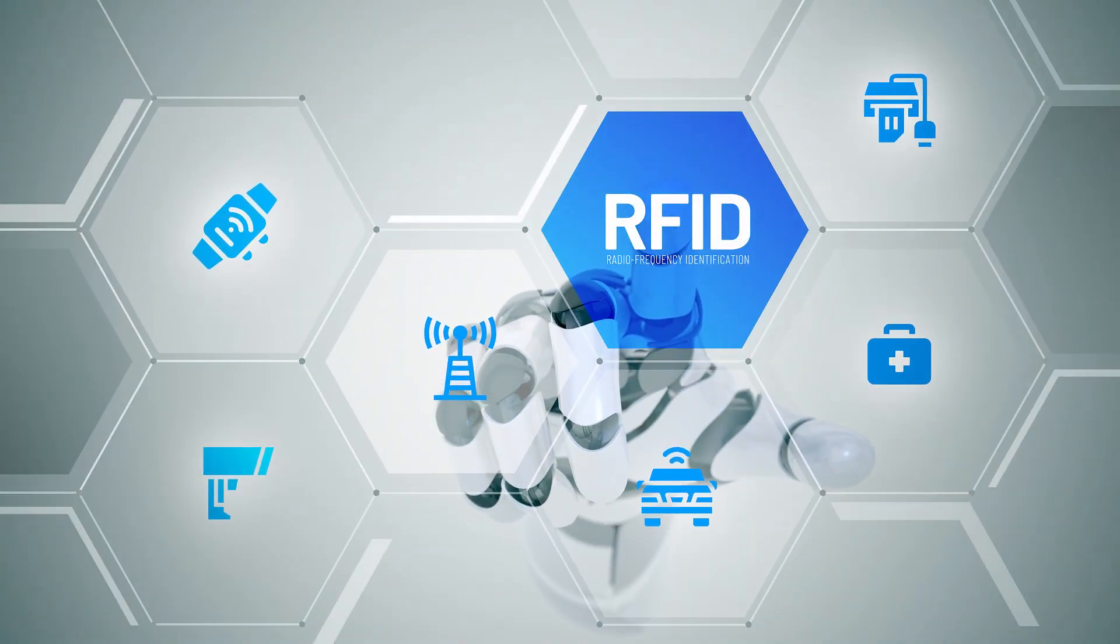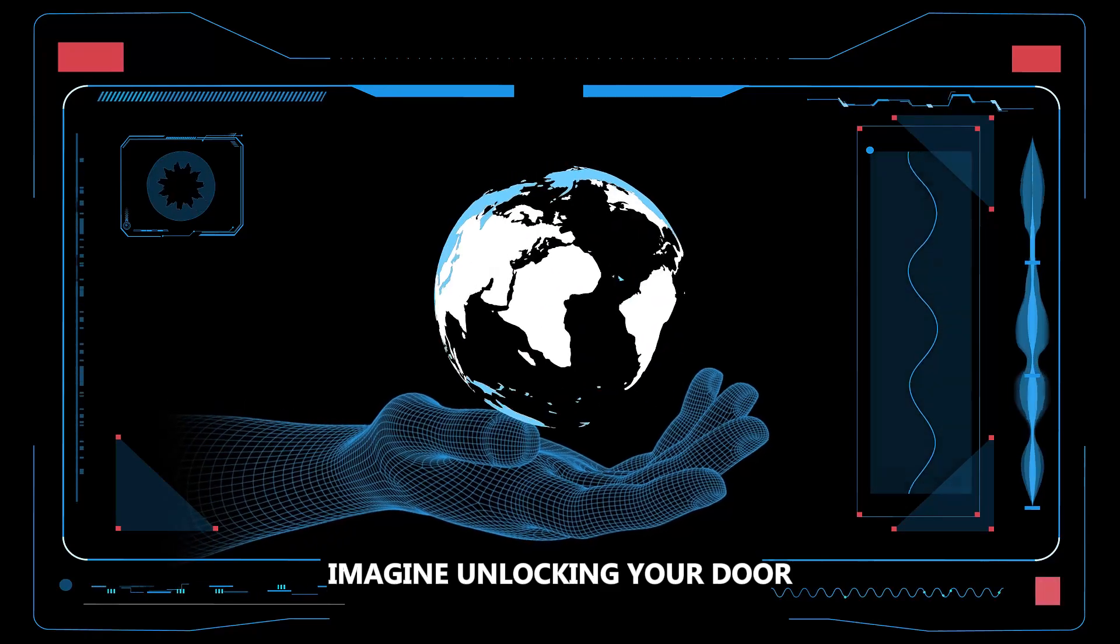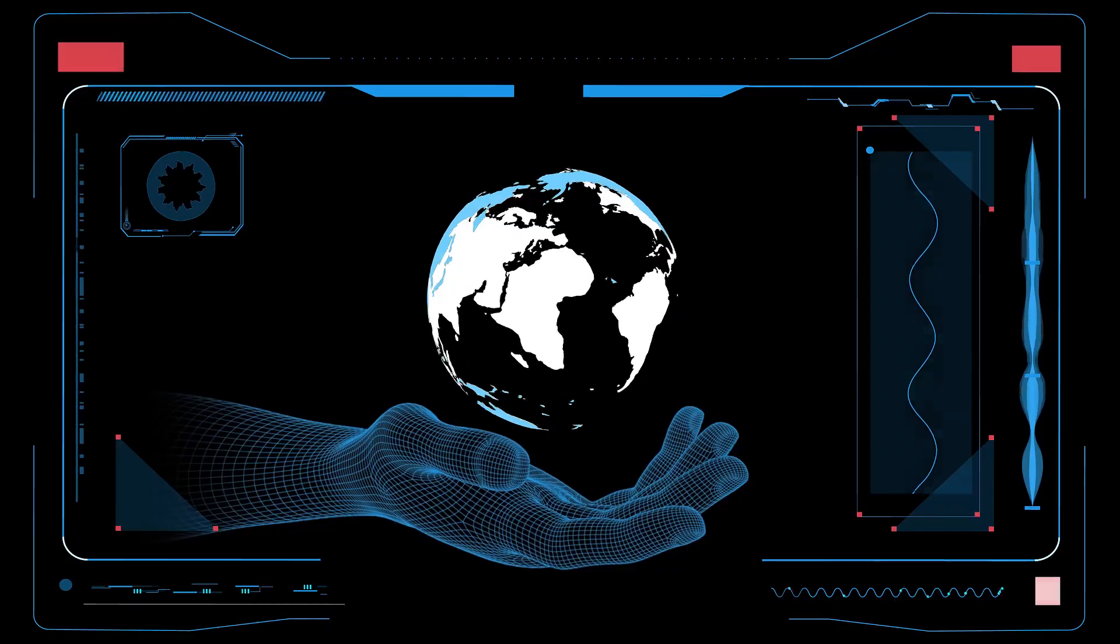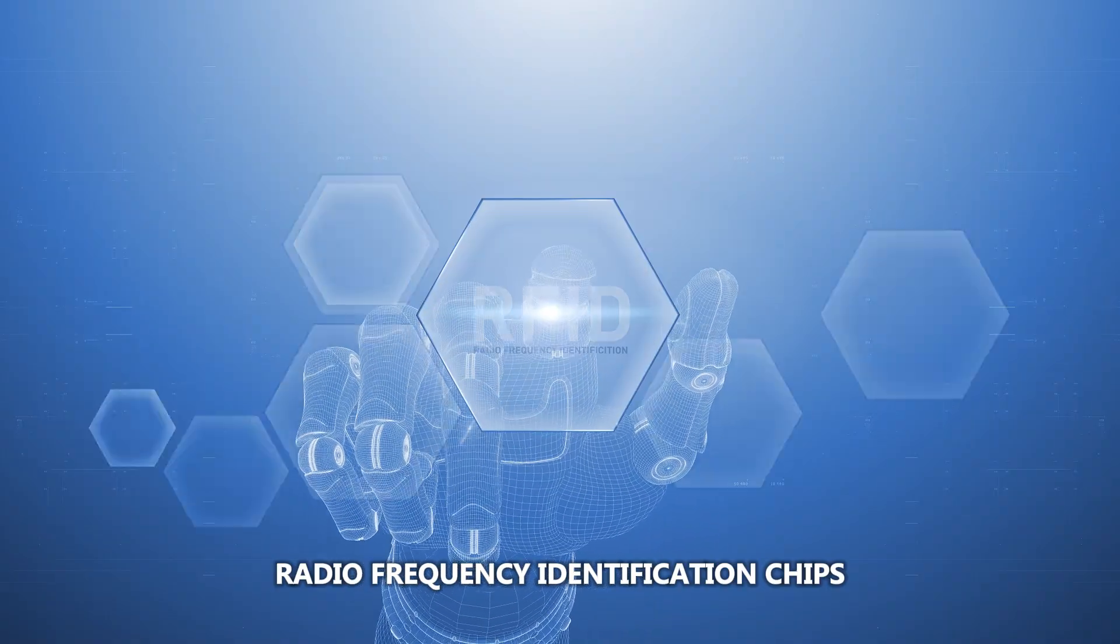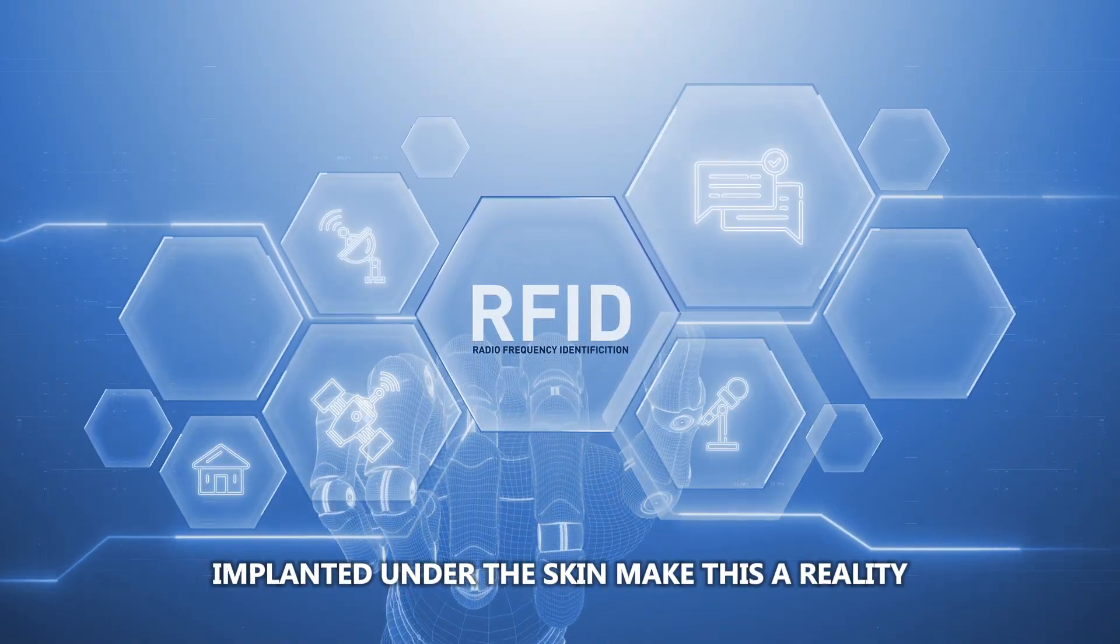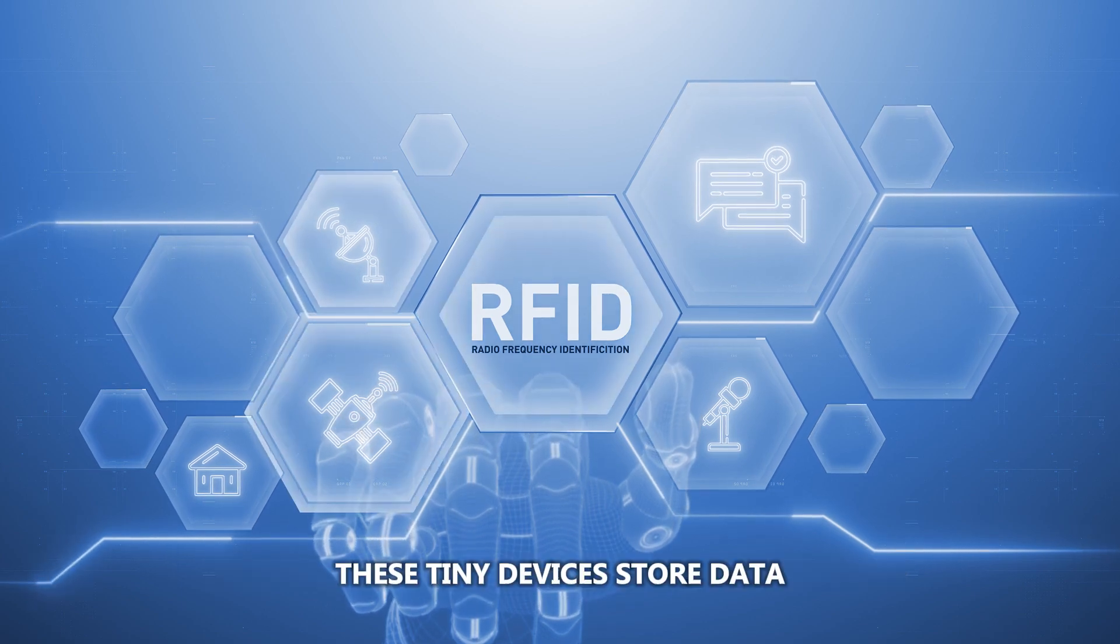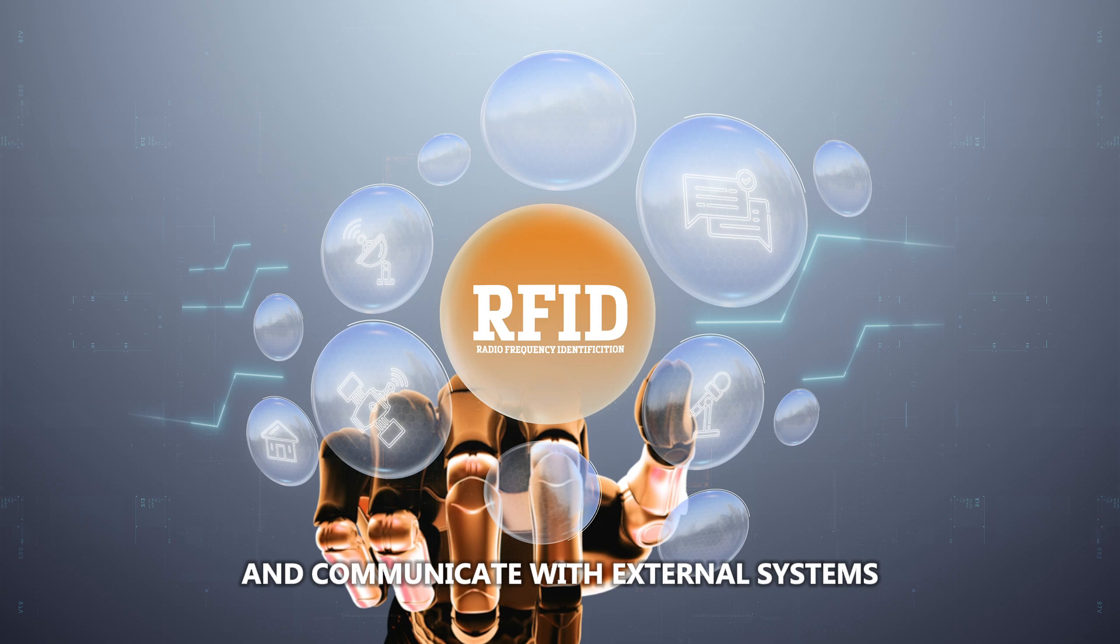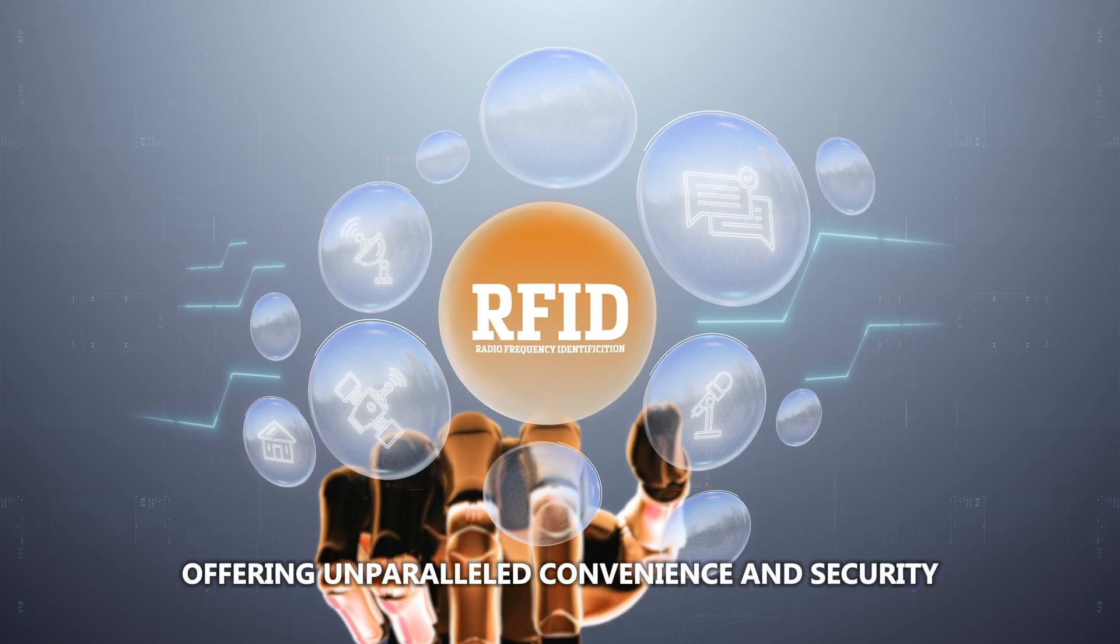RFID chips – Imagine unlocking your door, starting your car, or making a payment with a wave of your hand. Radiofrequency identification chips implanted under the skin make this a reality. These tiny devices store data and communicate with external systems, offering unparalleled convenience and security.